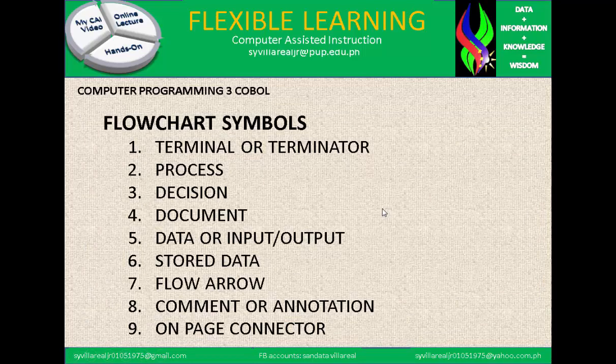Now we have the flowchart symbols. There are nine: terminal or terminator, process, decision, document, data or input-output, stored data, flow arrow, comment or annotation, and on-page connector.